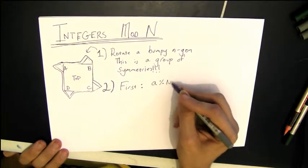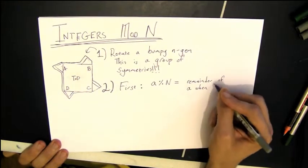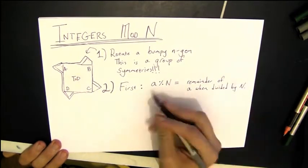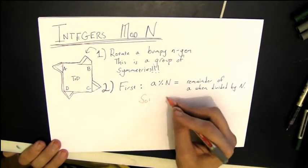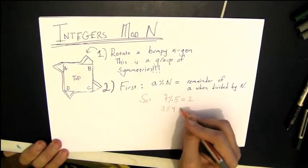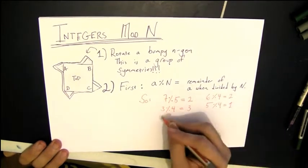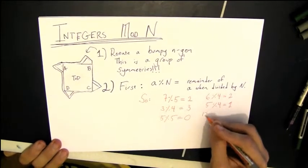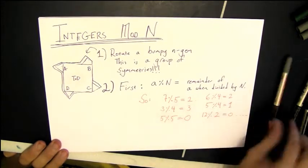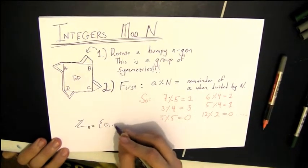For our second sort of realization of this group, we're going to first write a new operation, maybe one that you haven't seen before. We have that percentage sign there, and we're going to read that as a mod n. So whenever you see a percentage sign, we're going to read it as mod. And then we're going to say a mod n is the remainder of a when you divide by n. So 7 mod 5 is 2, 3 mod 4 is 3, 5 mod 4 is 1, 12 mod 2 is 0.